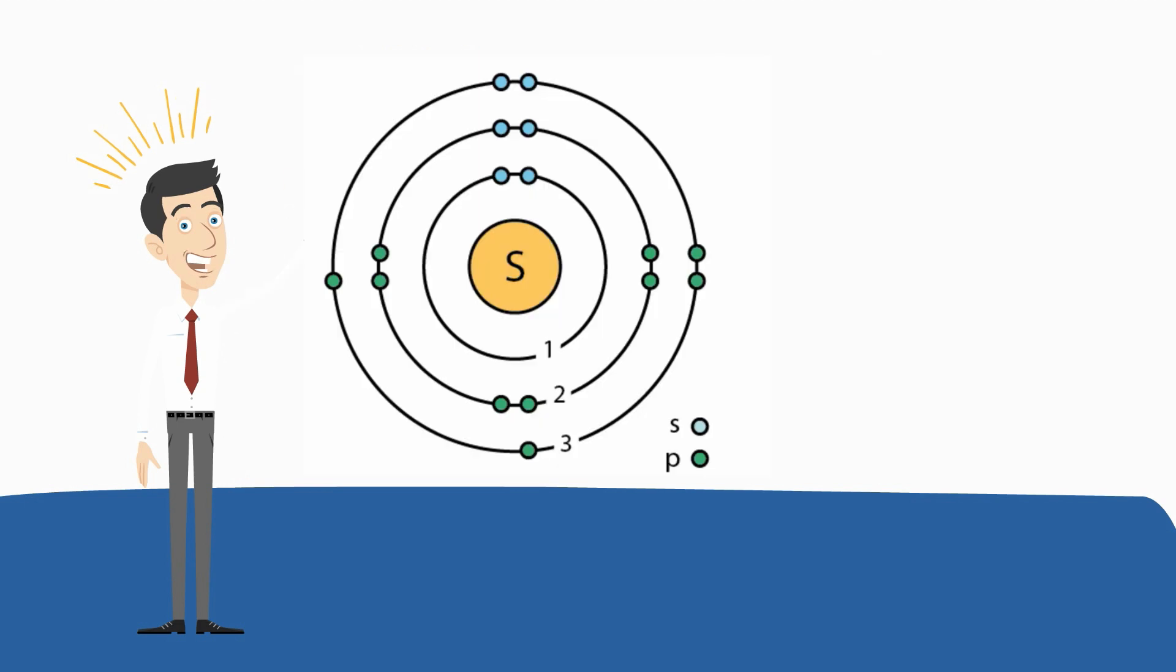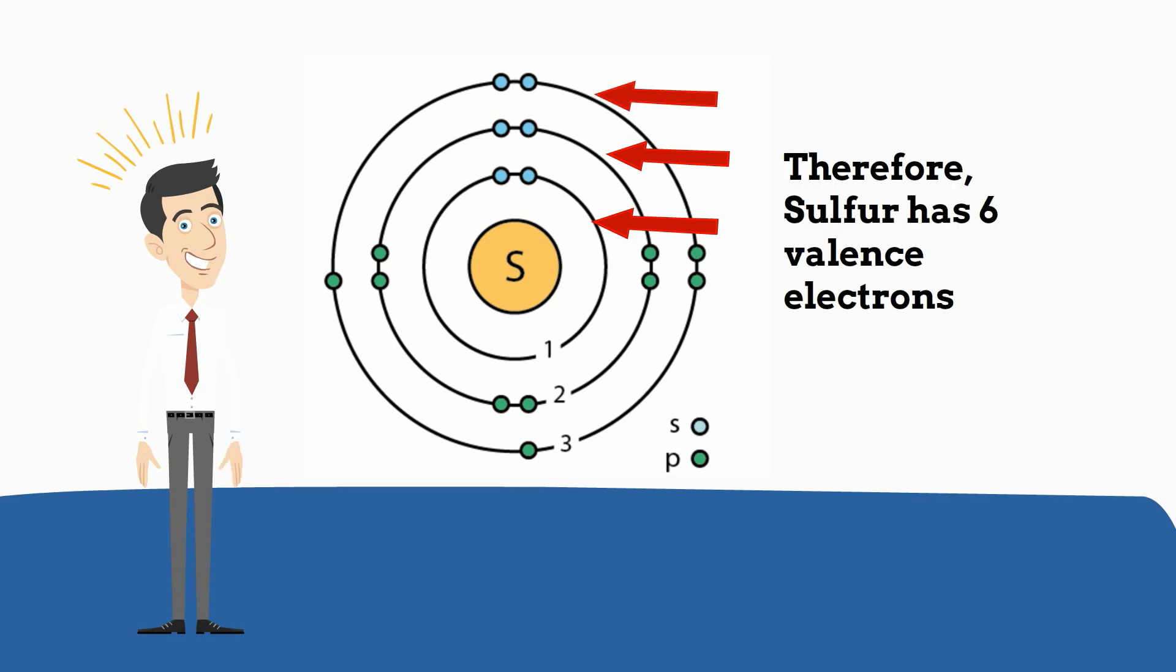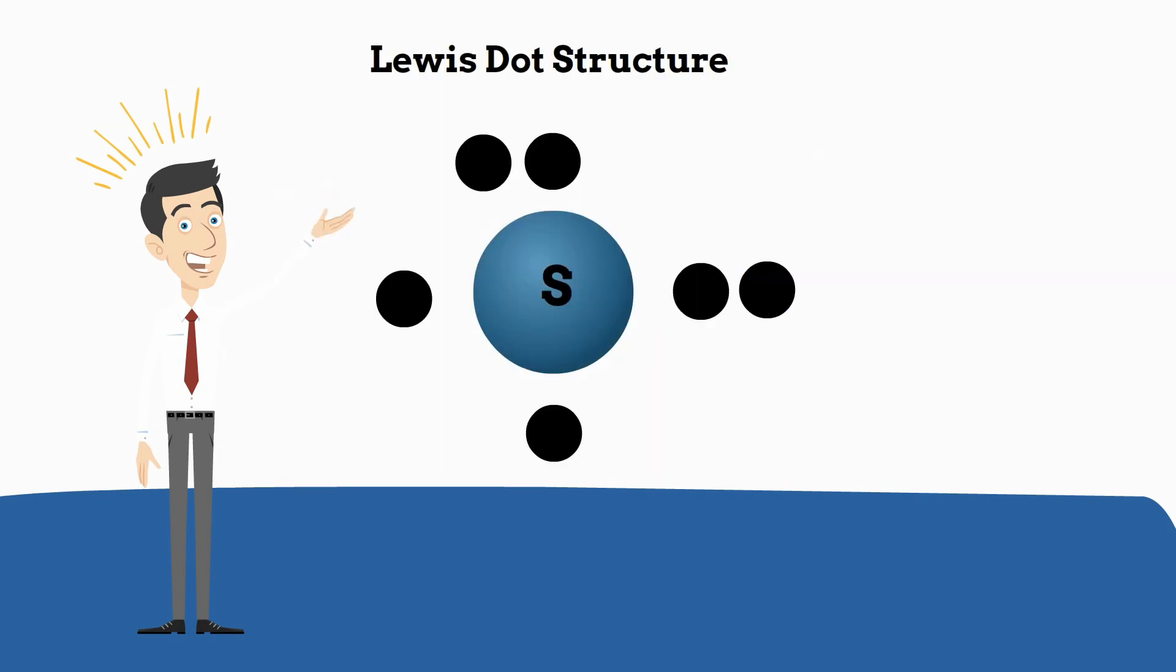I will place 2 in the first shell. Remember, you always fill up the first shell and work out. 2 in the first, 8 in the second, and that leaves 6 left over. You will see they are in the outer shell, so you have 6 valence electrons. If you do a Lewis dot structure, it looks like this.